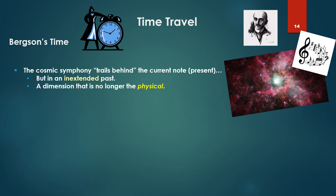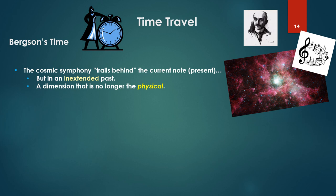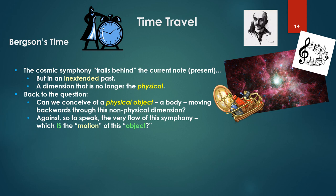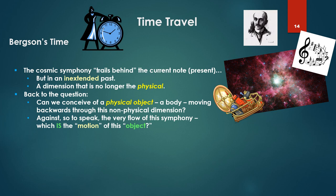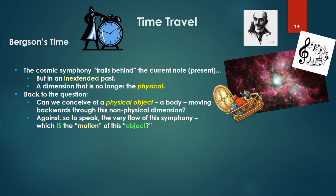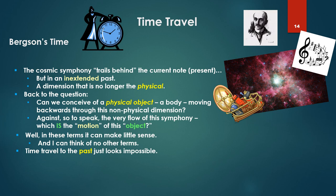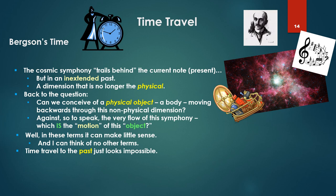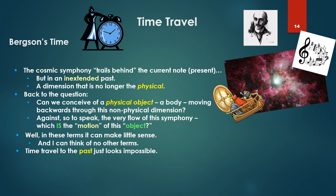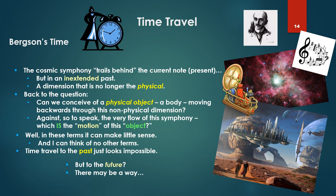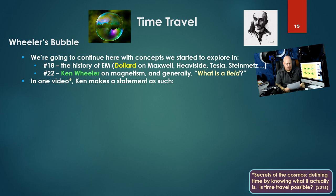So the cosmic symphony, so to speak, trails behind the current note, that is the present, the present note. But in an extended past, a dimension that is no longer the physical, as we define matter. Matter, of course, being always the present, the present instant. But back to the question, can we conceive of a physical object, a body, a time machine, whatever, moving backwards through this non-physical dimension, against the very flow of the symphony, which is the motion of this object? Well, in these terms, it can make little sense. Time travel to the past just looks impossible. This seems to be the implication of Bergson's model. But to the future, well, there may be a way.